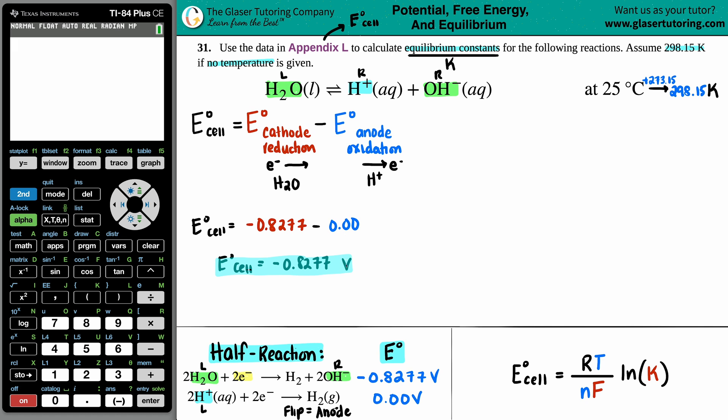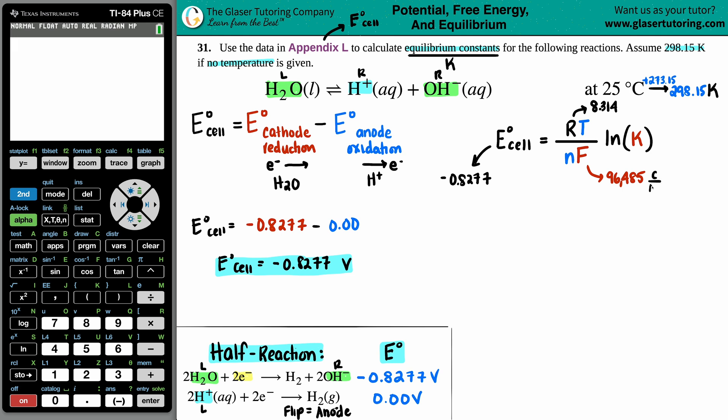Now, what we're going to do is we're just going to take that E cell and plug it into this equation. We have the E cell value, negative 0.8277. But now I need these four variables. Let's start with the constants first. R is always going to be a constant value in this equation. This is the energy constant, 8.314. The other constant is Faraday's constant, which is the F. That's 96,485. The units for F is Coulomb per mole. Temperature, just like we said before, was the 298.15.